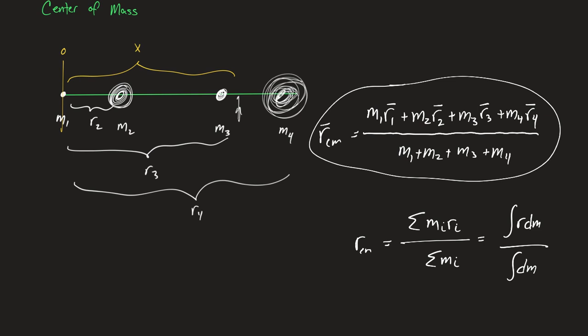The bell is going to interrupt us in just a minute, but tomorrow we need to take this idea of center of mass and apply it to a system of objects that's moving. Think about this: what if r is changing all the time — what if these objects are moving in different directions? That would mean the center of mass is also moving. That might not seem like much, but we'll get to that tomorrow.